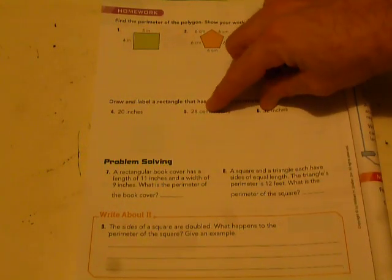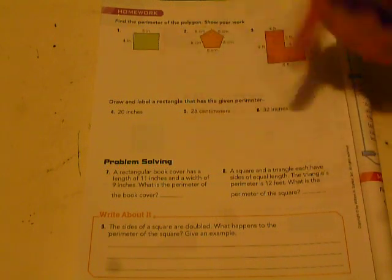This one's 28. If you divide that by four, that equals seven. So you can draw a square with seven, seven, seven, seven, that all equals 28.